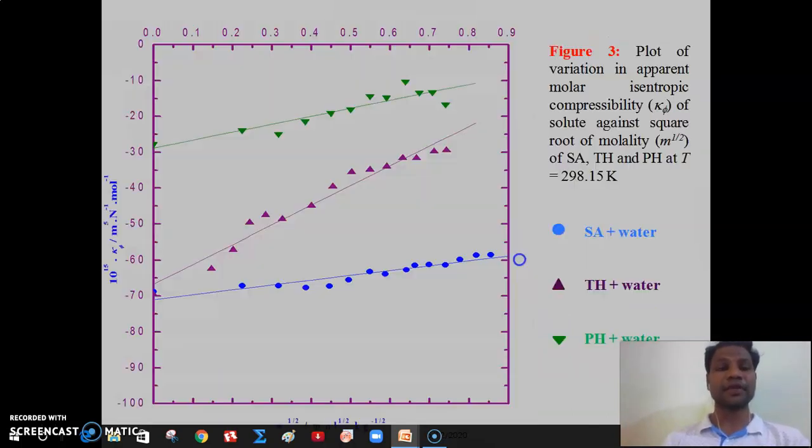The plot of apparent molar isentropic compressibility, K phi, against square root of molality is shown in Figure 3. It can be observed that K phi values vary linearly with the molality of the solution for all the studied temperatures. It is also observed that K phi value becomes less negative with rise in temperature. It may be due to the fact that at lower temperature water around the solute molecule is tightly bounded to solute and yields a high negative value.